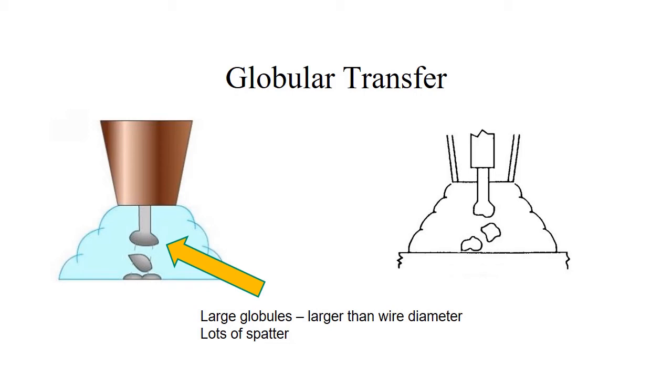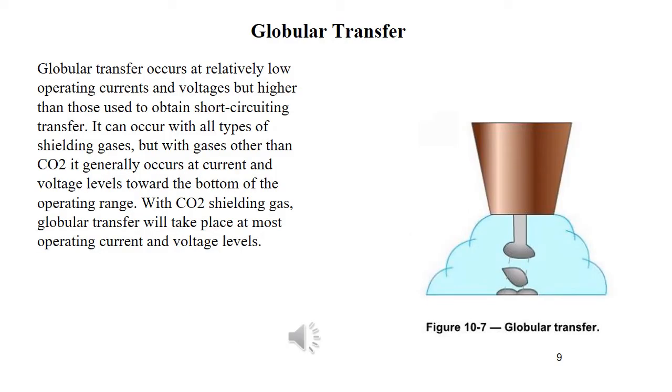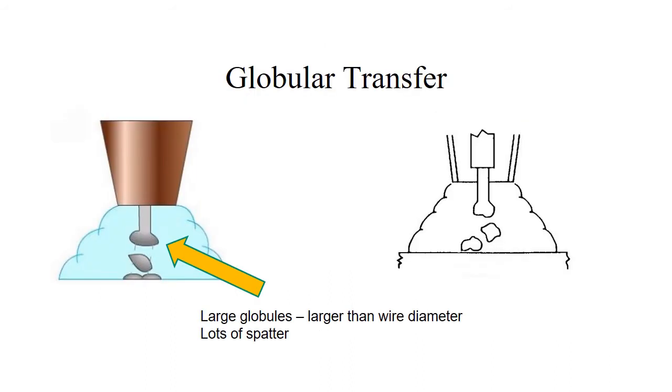Next up is globular transfer. This is kind of a nasty sounding process. If you're out there on the shop floor and you walk by and you hear something similar to this, this is globular transfer. It's got a really rough sounding transfer. It just kind of hurts your ears to listen to. [Welding demonstration sound] That was globular transfer. It just sounds rough and nasty, just due to the transfer mode and the large size of the droplets or globules. It doesn't sound like anything I want to listen to for any appreciable amount of time.